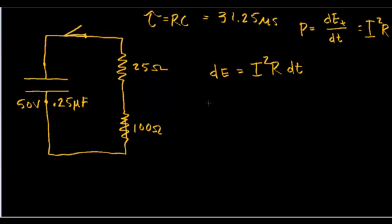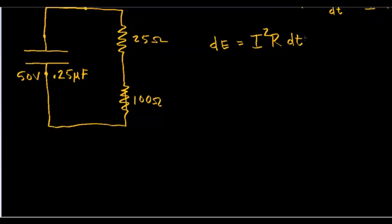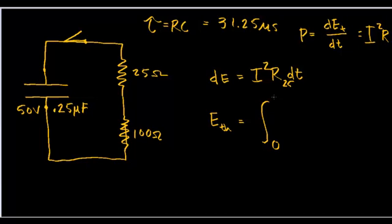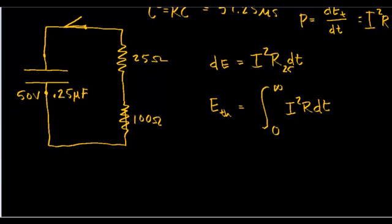Now we're going to integrate that to figure out the entire amount of energy dissipated on this resistor. We'll take the integral of both sides — this will just undo itself — and we'll get that the thermal energy equals the integral from 0 to infinity of I²R·DT. Why are we looking at this as it goes off to infinity?